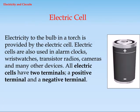Electric cell. Electricity to the bulb in a torch is provided by the electric cell. Electric cells are also used in alarm clocks, wrist watches, transistor radios, cameras, and many other devices. All electric cells have two terminals: a positive terminal and a negative terminal.